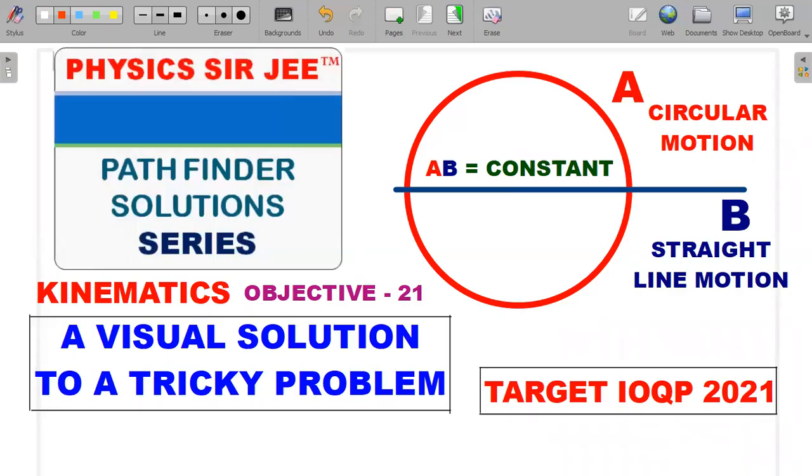Hey, you guys, welcome back to the channel Physics RG. Here we are in Pathfinder Solution Series. Today I brought forward a tricky problem from the topic of kinematics - objective number 21 in the book Pathfinder. There can be alternative solutions to this, but what I'd like to present here is a visual way of solving the problem, definitely an enriching way once you go through the solution.